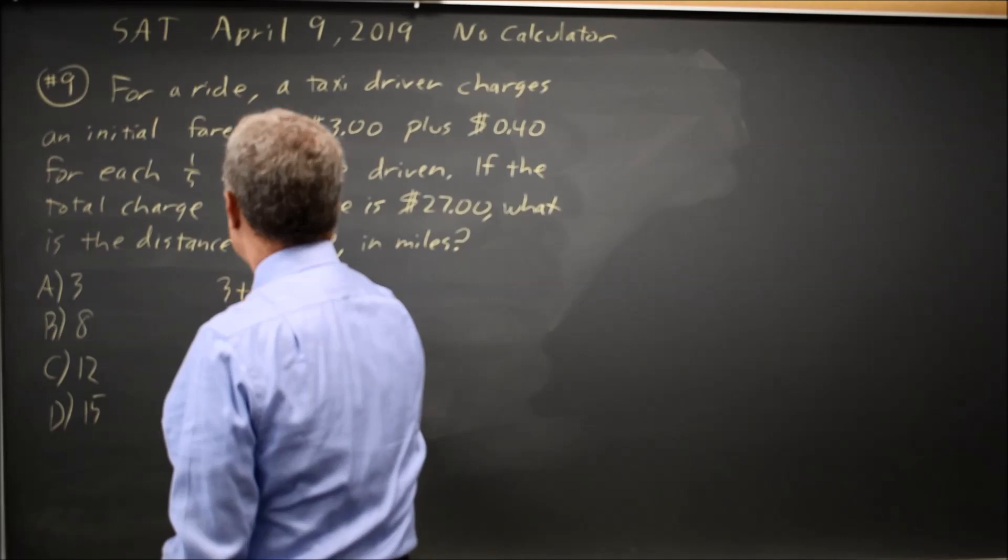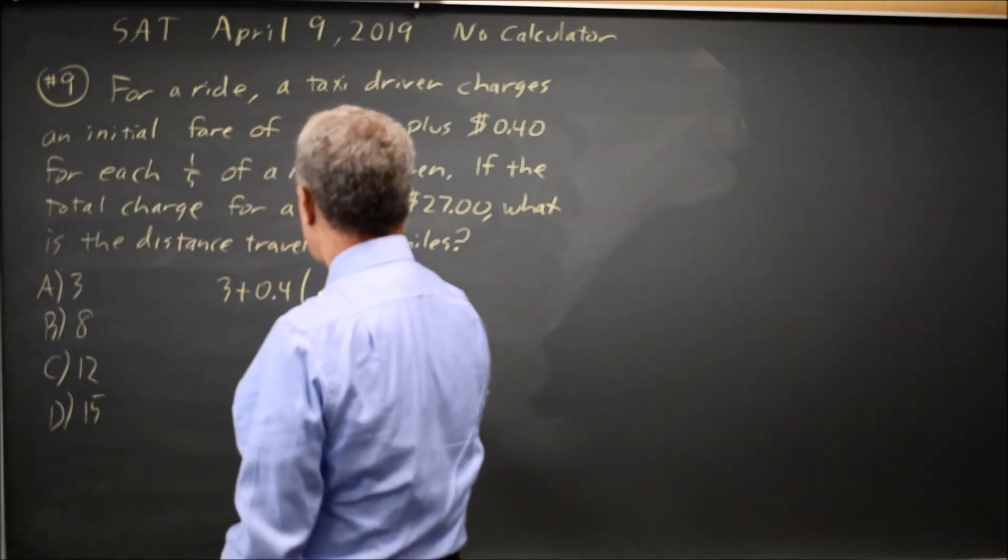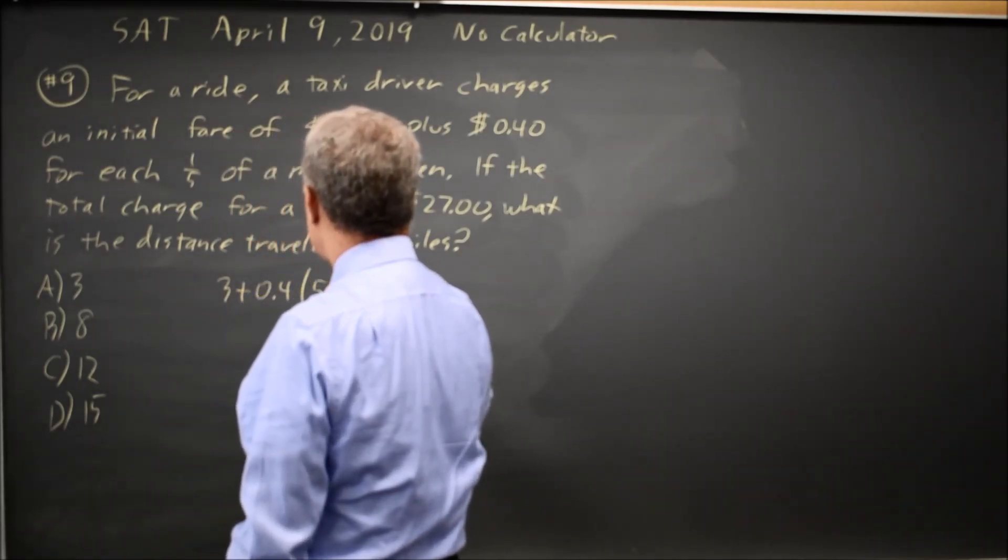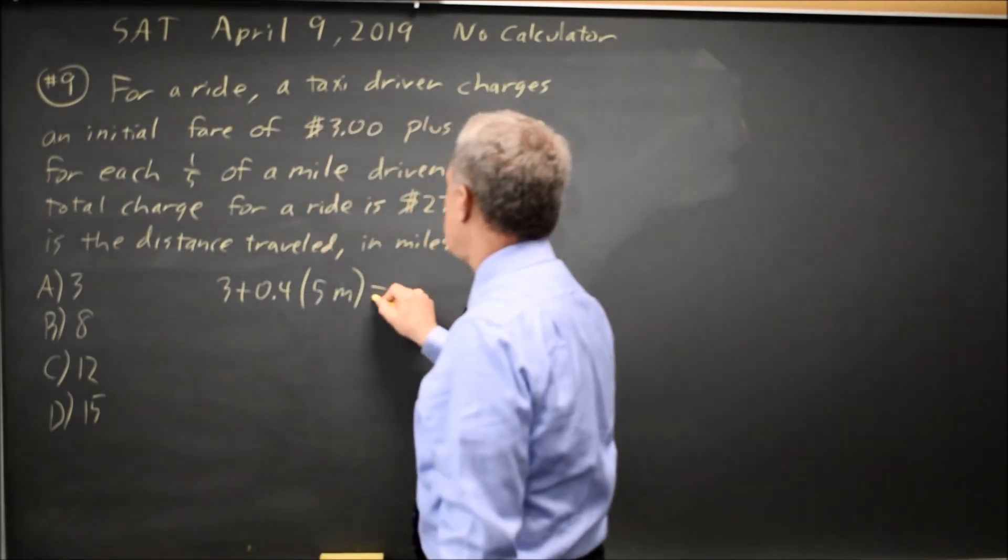So we have 3 plus 0.4 times the number of fifths of a mile, which is 5 times the number of miles, equals 27.